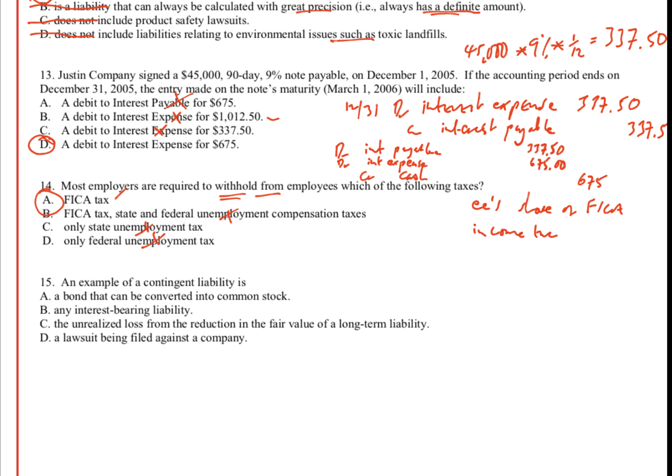Question 15: an example of a contingent liability. A convertible bond is a straightforward liability — not contingent. Any interest-bearing liability is not contingent either — we know exactly what it is. An unrealized loss from a reduction in the fair value of a long-term liability — if anything, that would be a gain, and there's nothing contingent about it. A lawsuit: it's not the lawsuit itself but the loss arising out of it that's the contingent liability. Given the wording, this is the least bad answer, so the answer is D.